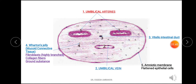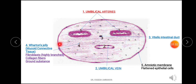At the most peripheral — the outermost side of the umbilical cord — you will see the amniotic membrane. Structurally, this amniotic membrane is made up of flattened epithelial cells.